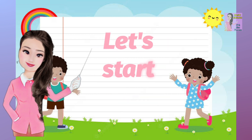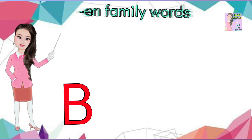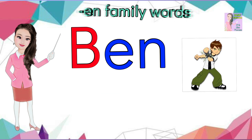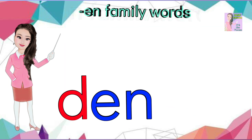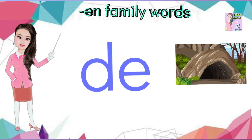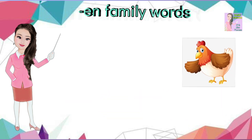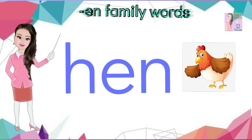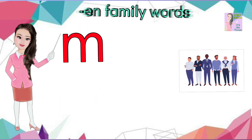Let's start reading EN family words. B-N, ben. B-E-N, ben. D-N, den. D-E-N, den. H-N, hen. H-E-N, hen.